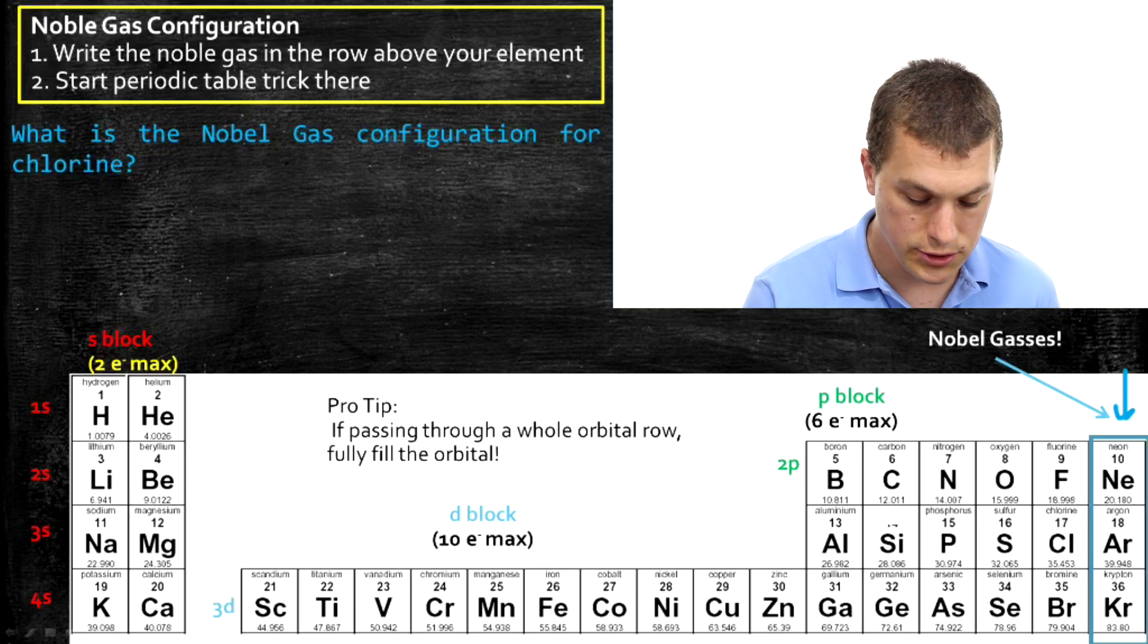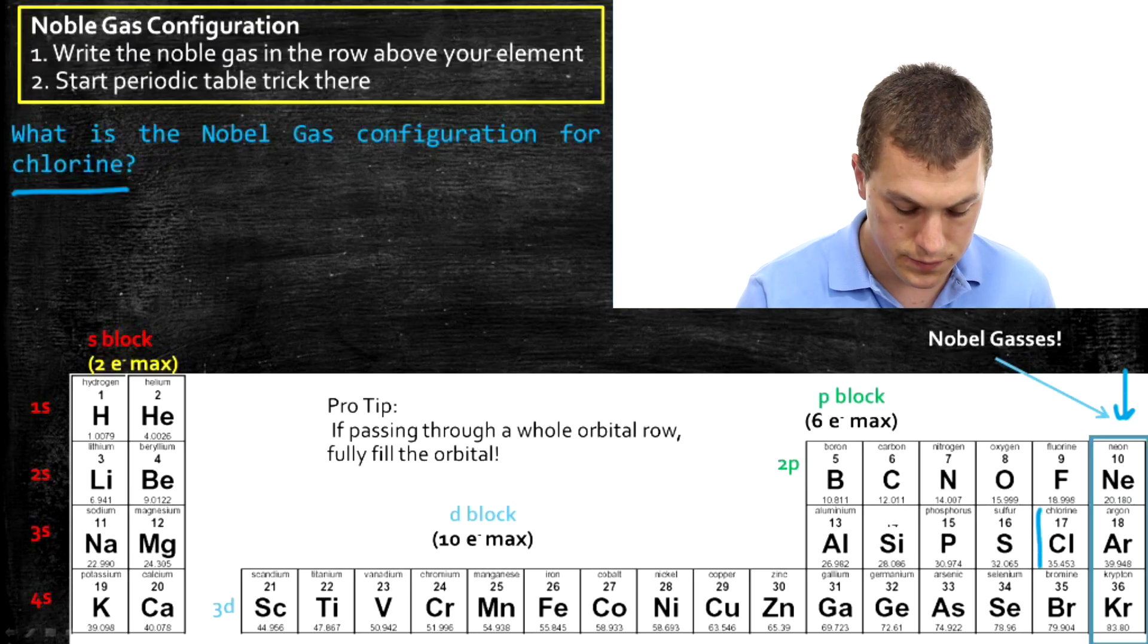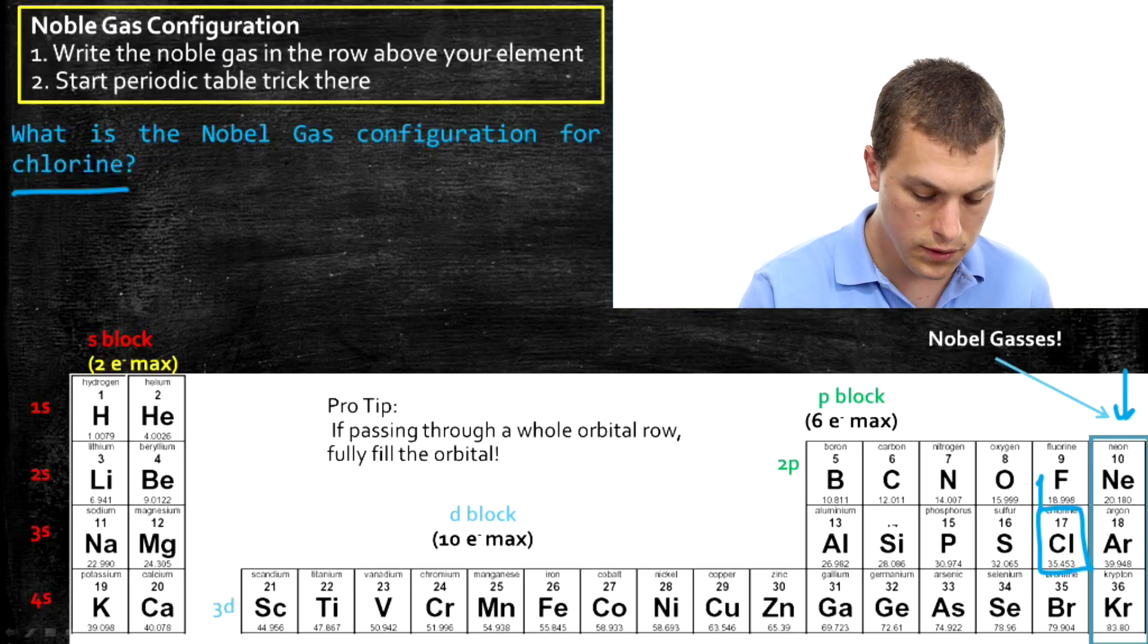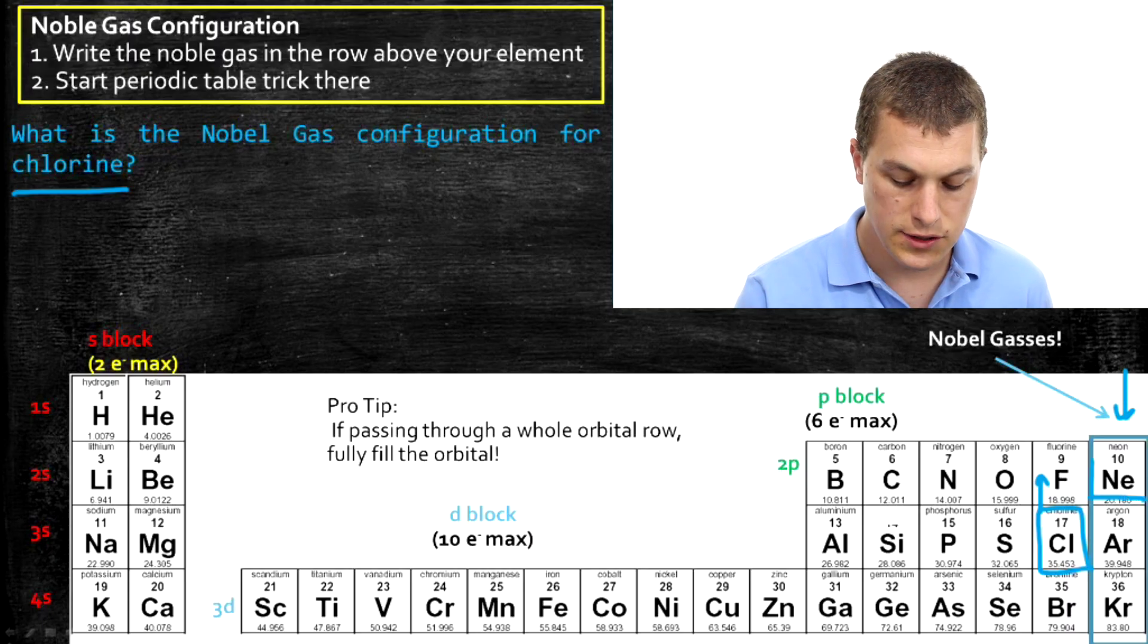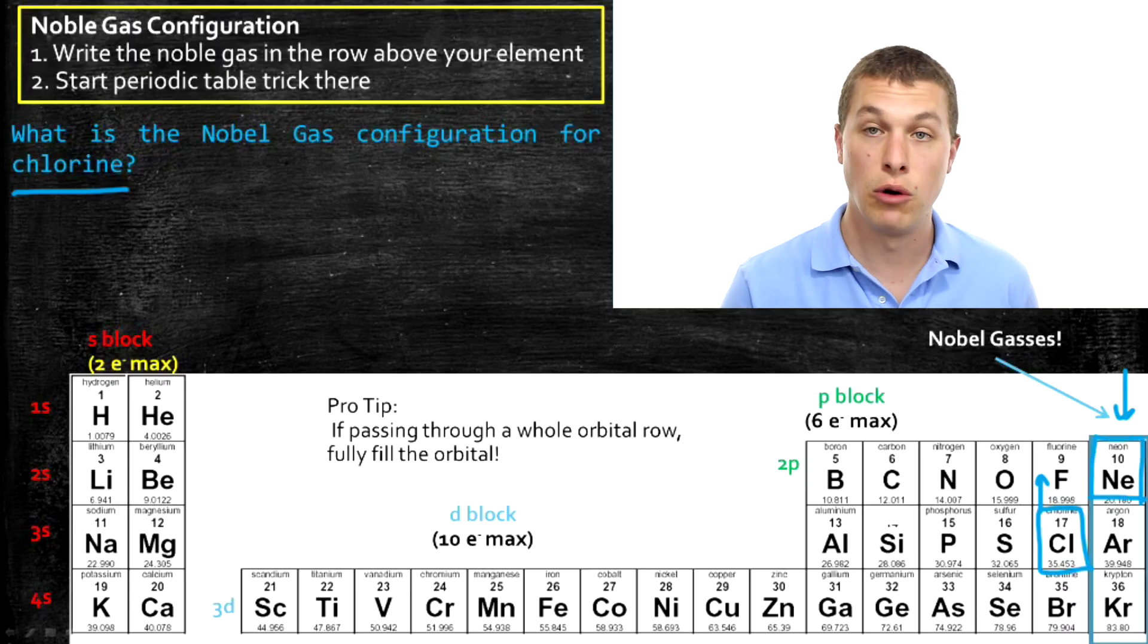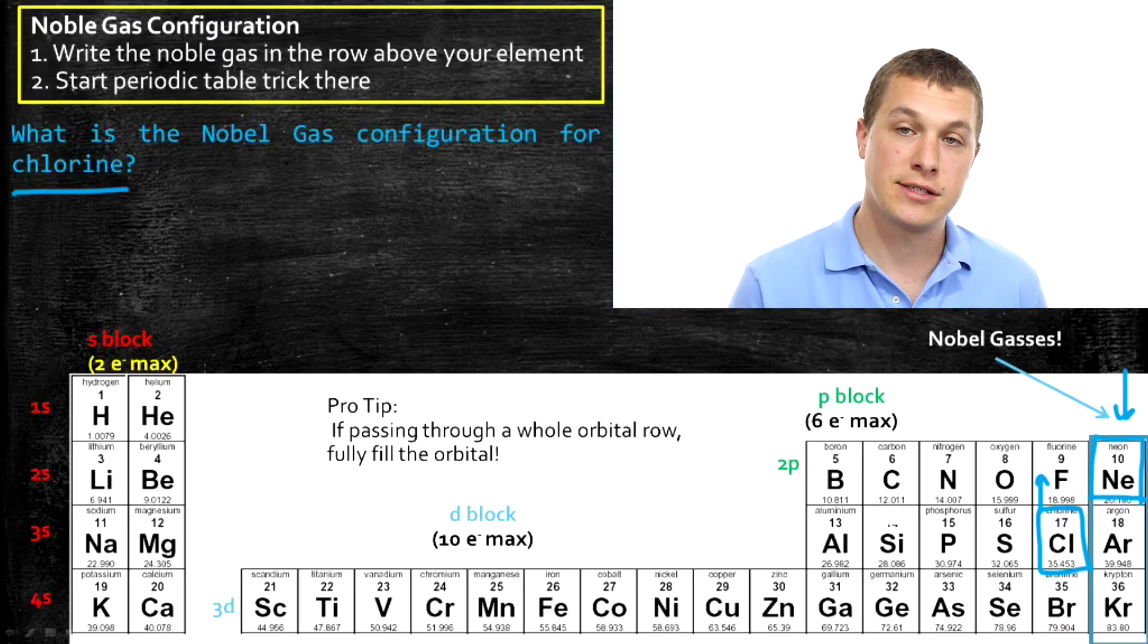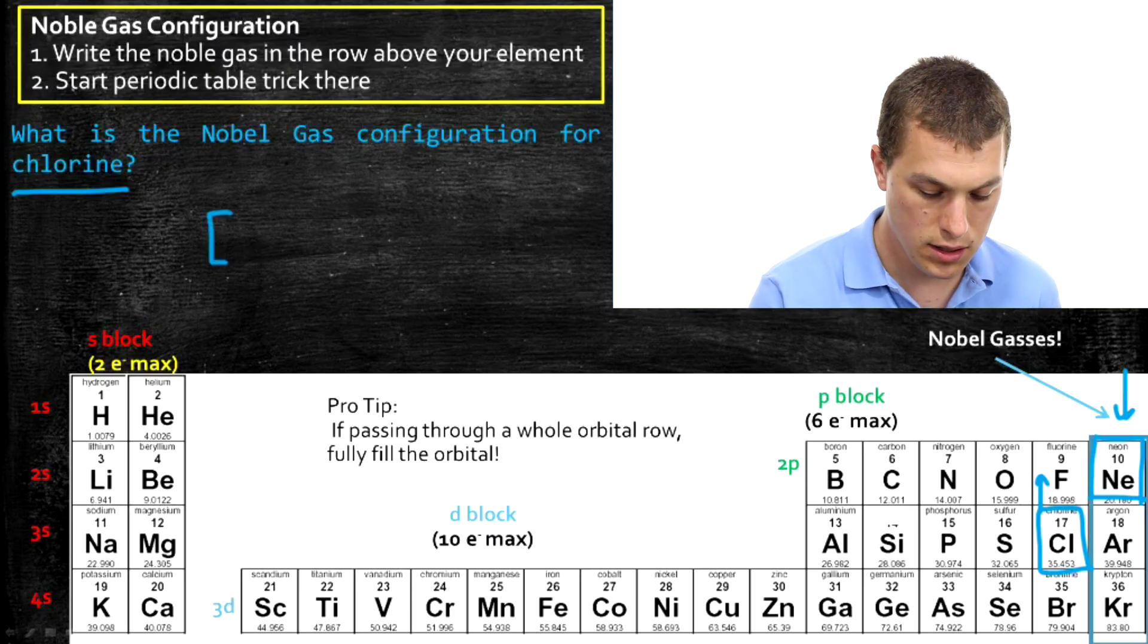So for example, here we want to write the electron configuration for chlorine. So I go to chlorine on the periodic table. Where's chlorine? It's right here. So I see chlorine's right there. And all I want to do is go up to the previous row. So one row up. What noble gas is there? Well, neon. So neon is the noble gas, a row up from chlorine. So we go one up. And now I start my electron configuration by just writing neon in brackets.